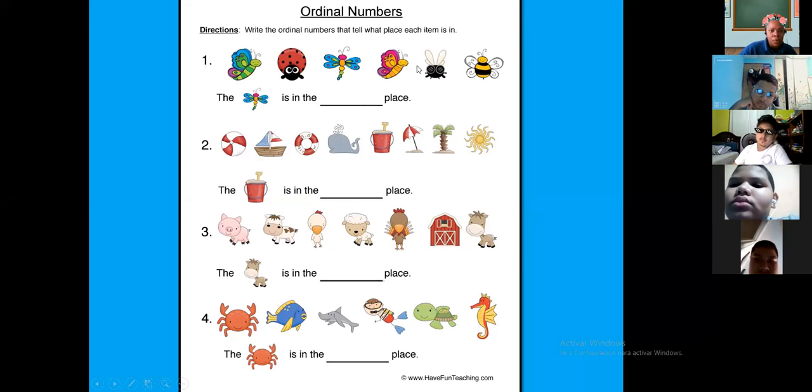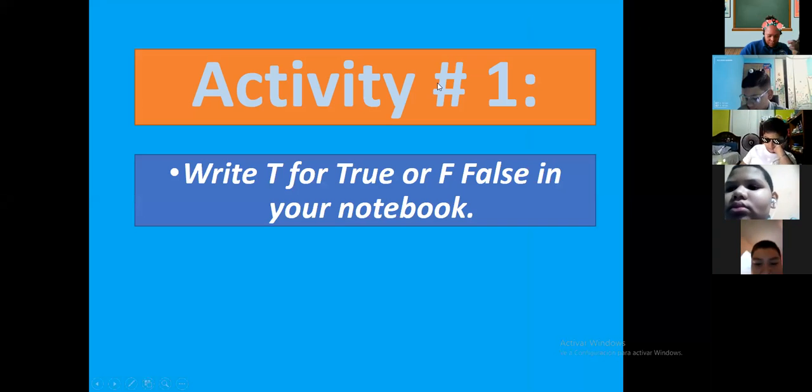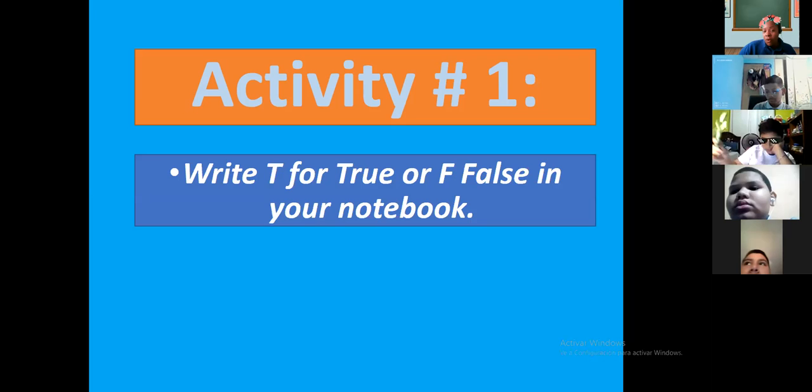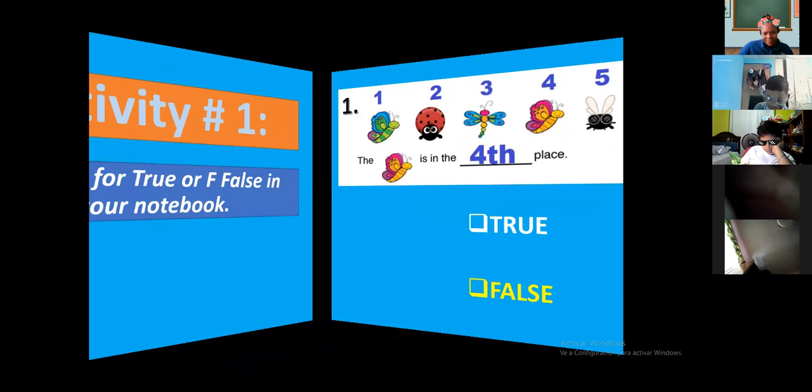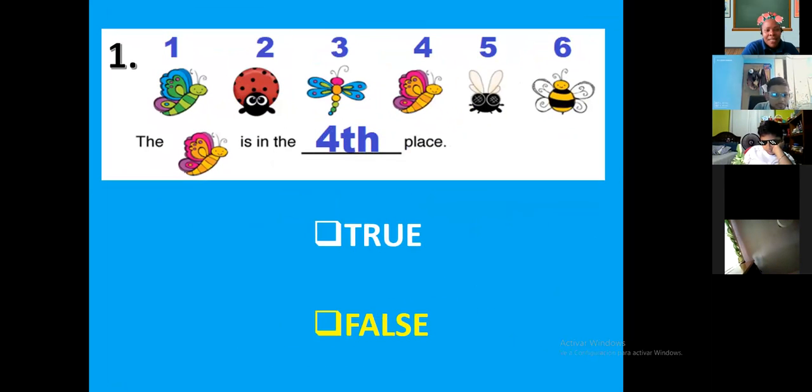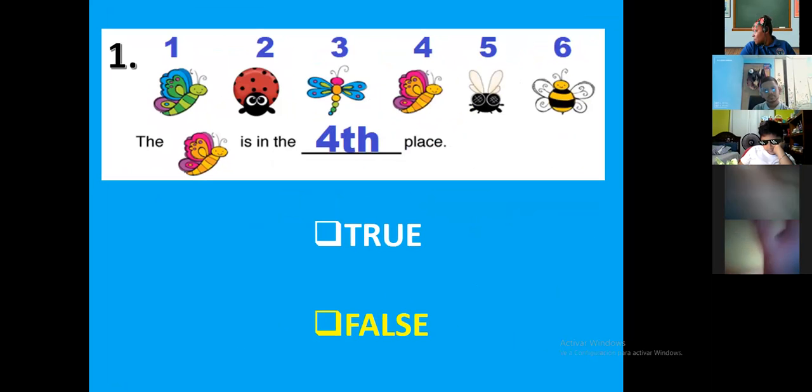Okay, entonces nosotros reconocemos los lugares de acuerdo a lo que... Activity number one, de acuerdo a lo que vemos. Write T for true, or false, or F for false, sorry, for false in your notebook. Number one, the butterfly is in the 4th place, true or false.